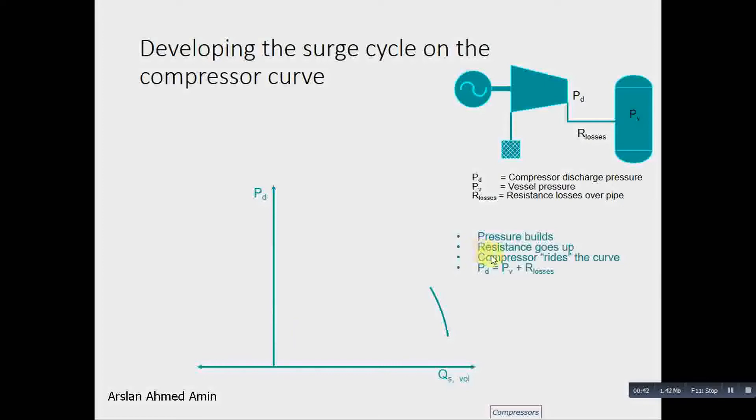Now suppose the pressure starts to build up, resistance goes up. The compressor rides the curve PD equals PV plus R losses. Here when the resistance starts increasing, the pressure reaches point A, then it goes to point B.